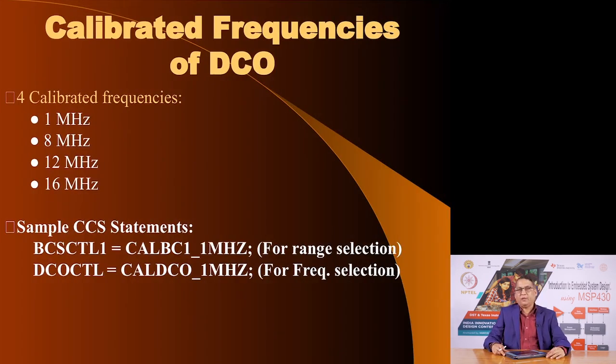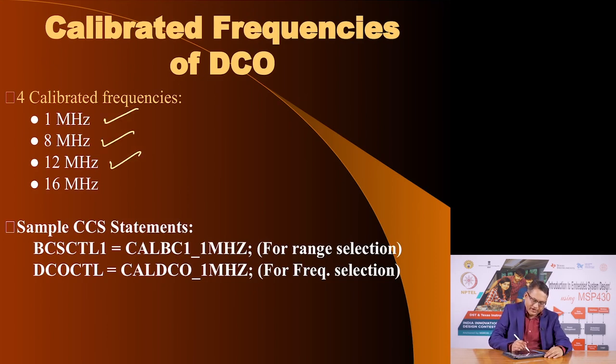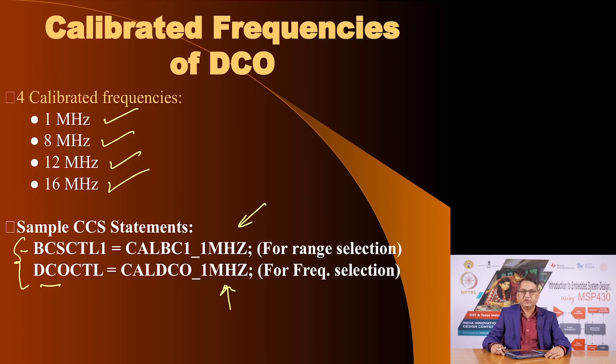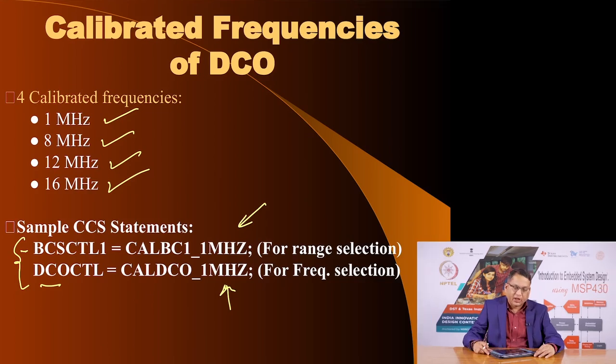The DCO has four calibrated frequencies: 1 megahertz, 8, 12, and 16 megahertz. You can write values into appropriate registers to select whatever frequency you want. Here is a sample code: two registers — one called the BCS control register and the other called the DCO control register. By writing appropriate bit mask values into these two registers, you will get a DCO frequency of 1 megahertz — a calibrated, quite accurate 1 megahertz frequency, not 1.1 megahertz.